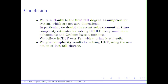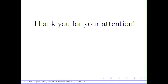In conclusion: we raised doubt on the first fall degree assumption for systems which are not zero-dimensional. In a follow-up article, we proved similar results for any zero-dimensional system. In particular, we doubt the recent sub-exponential time complexity results for solving ECDLP using summation polynomials and Gröbner-based algorithms. We do believe that ECDLP over F_{2^n} where N is prime is still safe. The second part is that we gave a new method of proving complexity of solving systems using the last fall degree, and we were able to give mathematical complexity bounds on solving HFE.